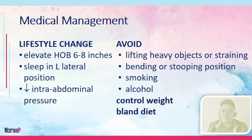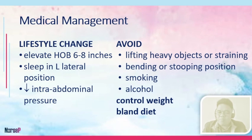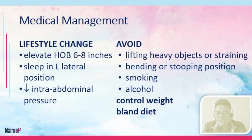We also have lifestyle changes, including elevating the head of the bed when sleeping at around six to eight inches, and sleeping in the left lateral position. Measures to decrease intra-abdominal pressure should be implemented. The patient needs to avoid lifting heavy objects or straining, avoid bending or stooping positions, avoid smoking and alcohol, control weight, and maintain a bland diet, as this has a tendency to be a lifestyle-related problem.